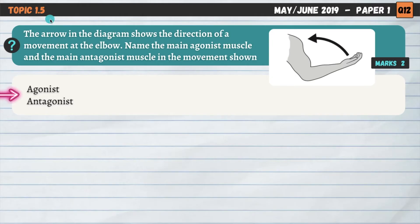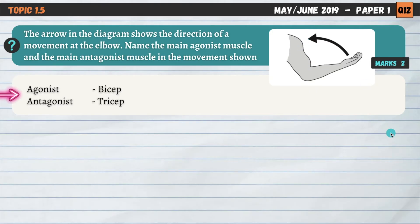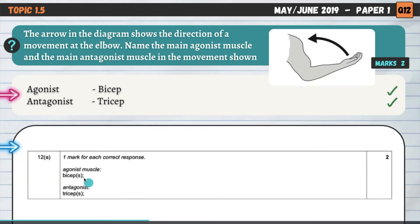The next question is on topic 1.5 on antagonistic muscle actions — the way muscles work together. The arrow in the diagram shows the direction of movement at the elbow; the hand is moving upwards so the elbow is bending — that's flexion. Name the main agonist muscle and the main antagonist muscle in this movement. If we're bending at the elbow, the agonist is the one doing the work — the bicep muscle. The bicep shortens, pulls on the forearm, raising the hand up towards the shoulder. The antagonist is the opposite muscle — the tricep — and its role is to relax to allow that movement to occur.